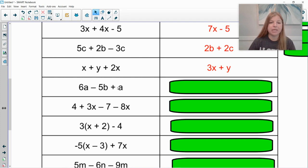6a minus 5b plus a. I can combine the 6a and the positive 1a to get 7a. And so the result is 7a minus 5b.